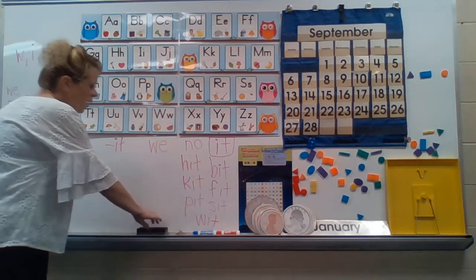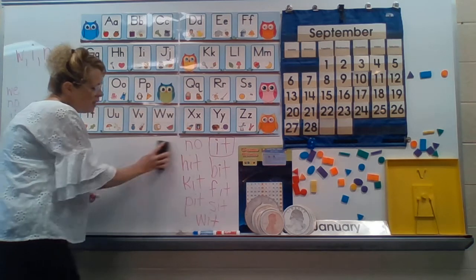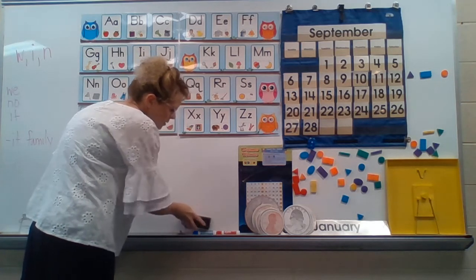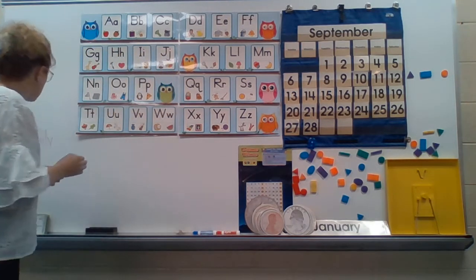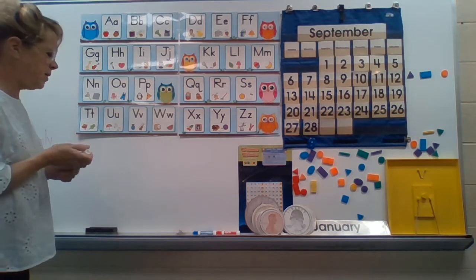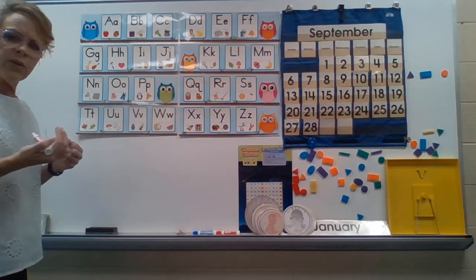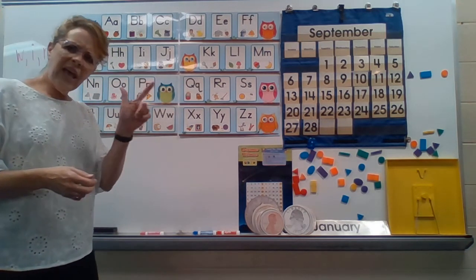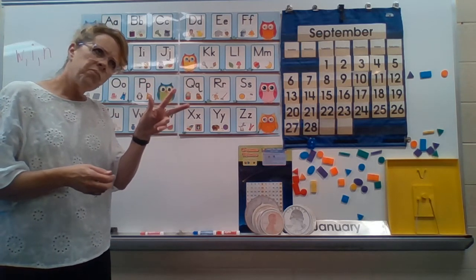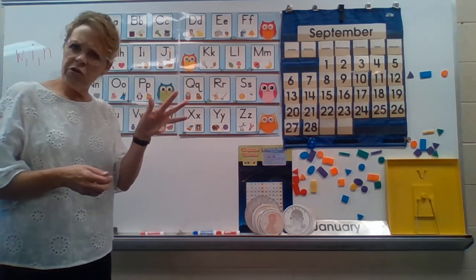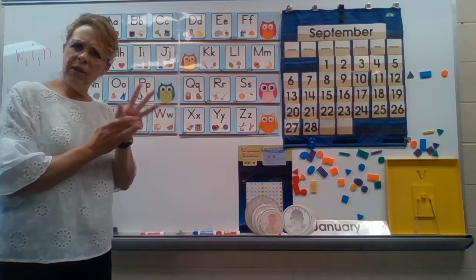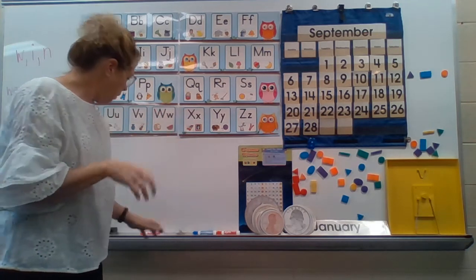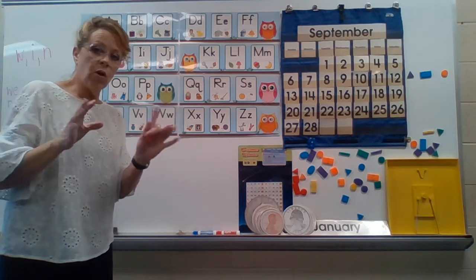Now, we want to see if we can write a sentence today with one or two of our sight words. Our sight words are we, no, and it. How about we start with we. Let's see. How about, I'm going to count. We have no apples. So how many words did I say? We have no apples. Four words. So when I write, I need to make sure I have four words when I'm done.